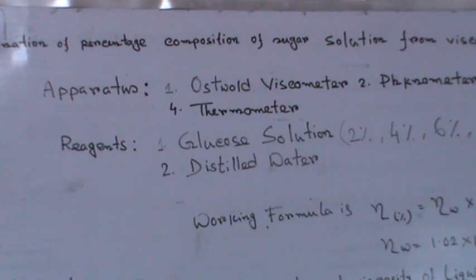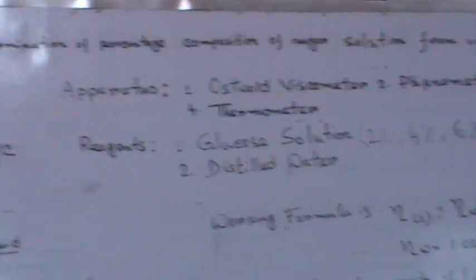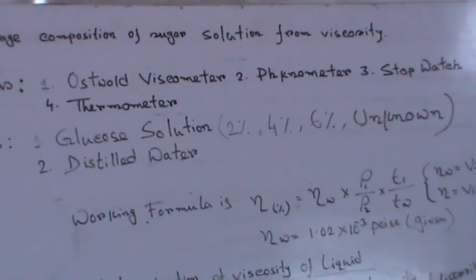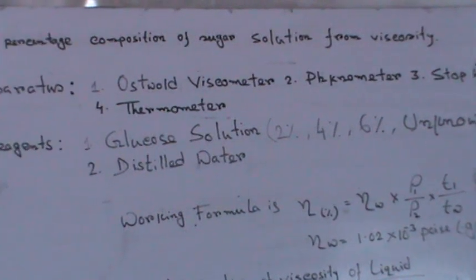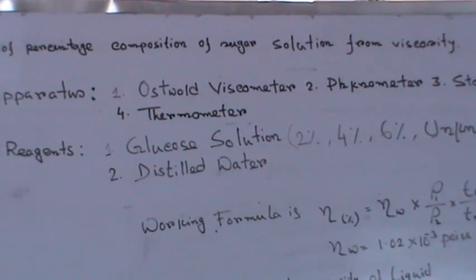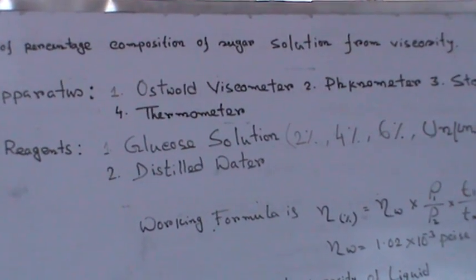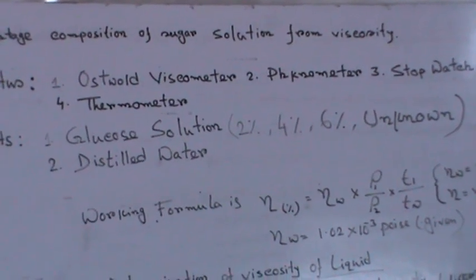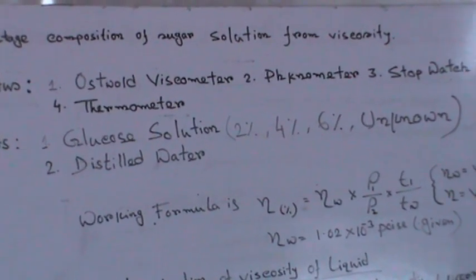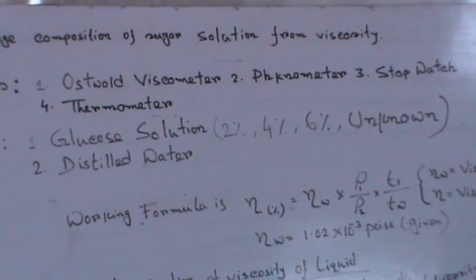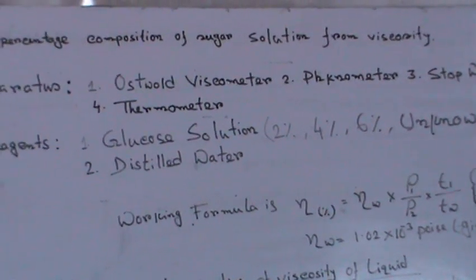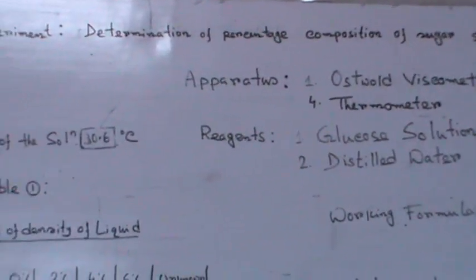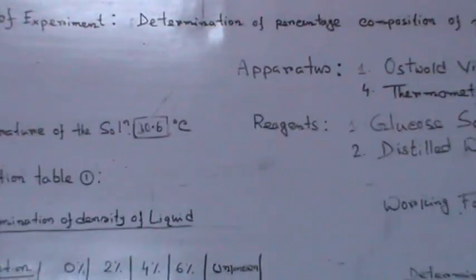Those are the very basics of viscosity. During our experiment we will use the Oswald viscometer, the pycnometer, a stopwatch, and a thermometer. The reagents used are glucose solutions of two percent, four percent, six percent, an unknown solution, and distilled water.